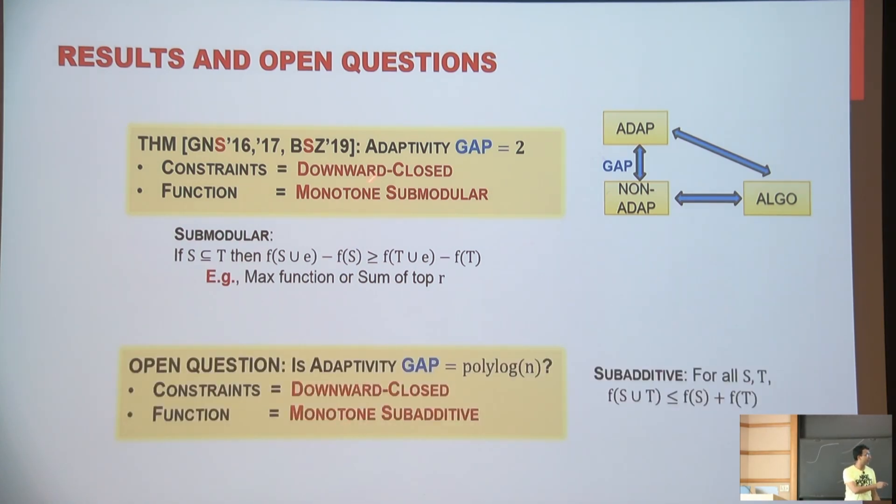And one open question in this field is, what if I make my class even larger? So it's from sub-modular to sub-additive functions. So here we know the adaptivity gap cannot be a constant. But can it be polylogin? So this we don't know. So it's an open question. Nice question to think about.